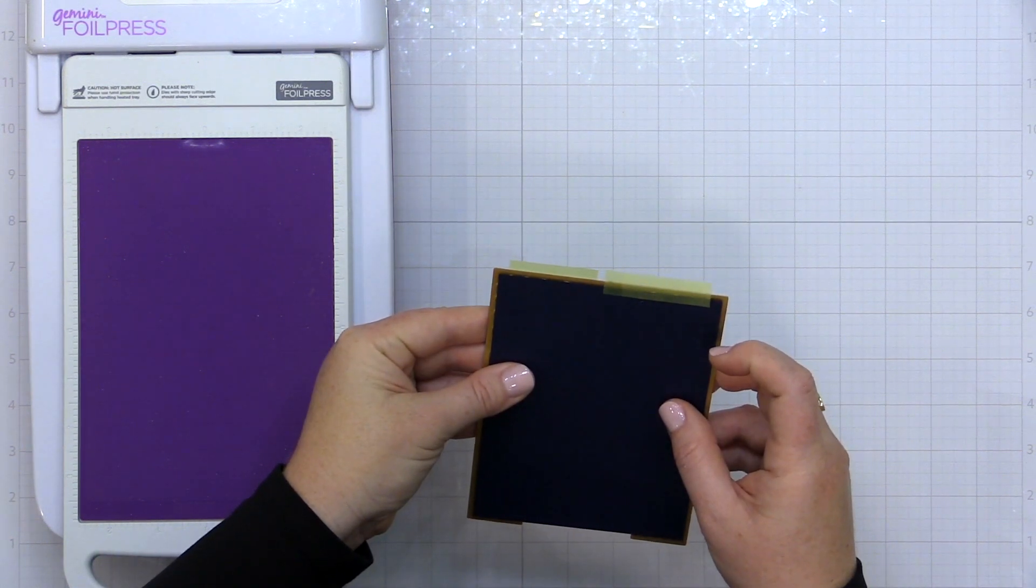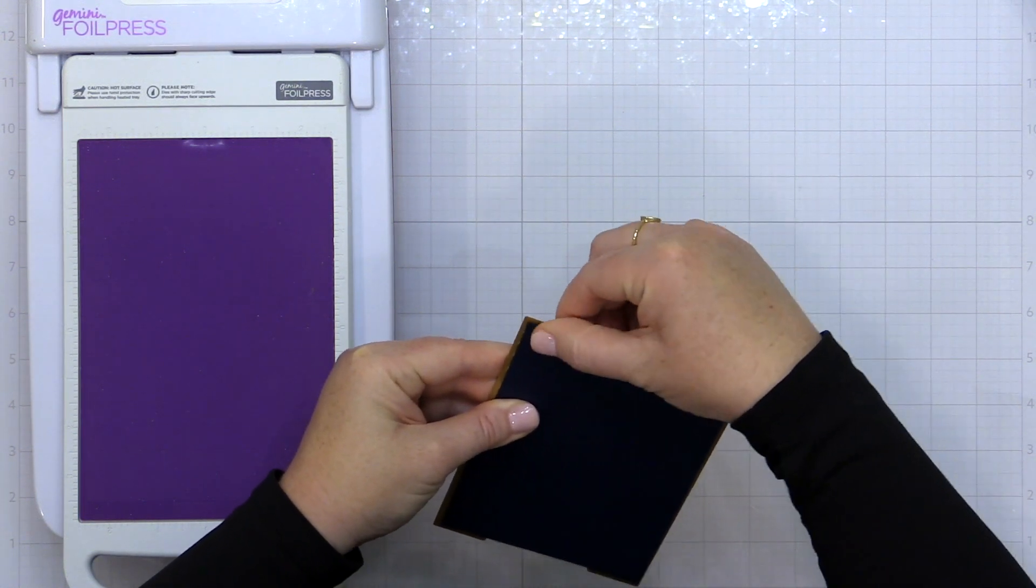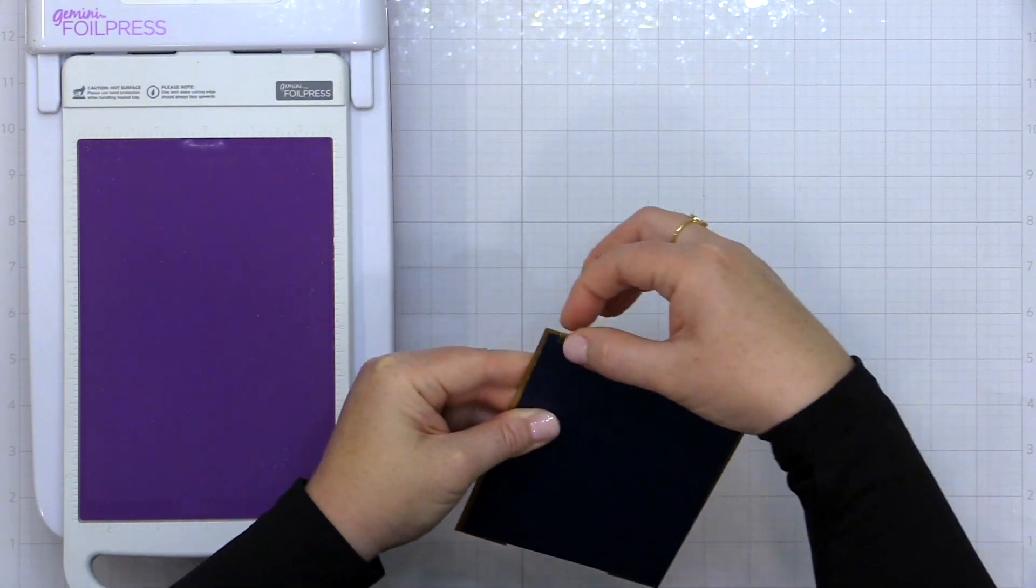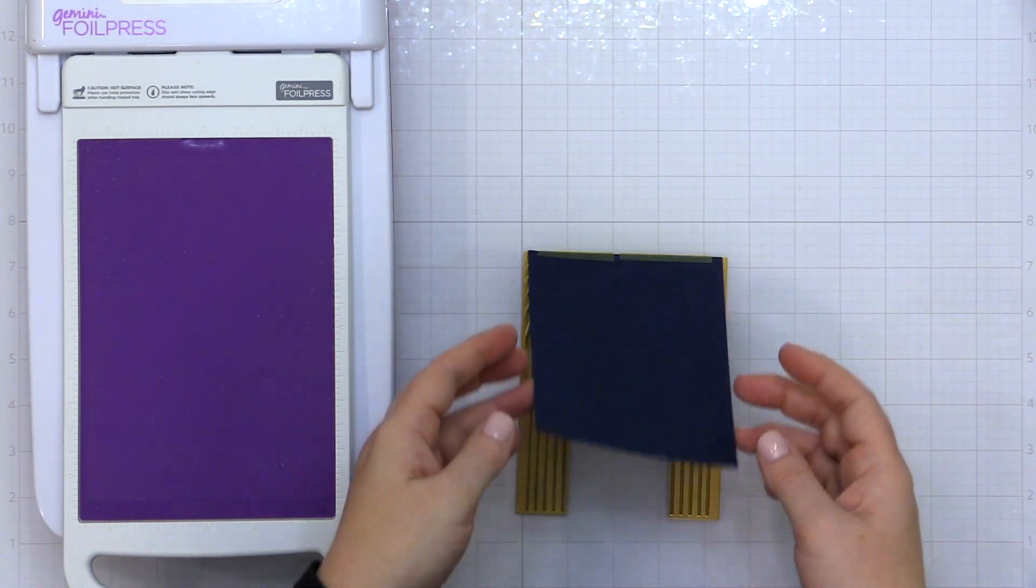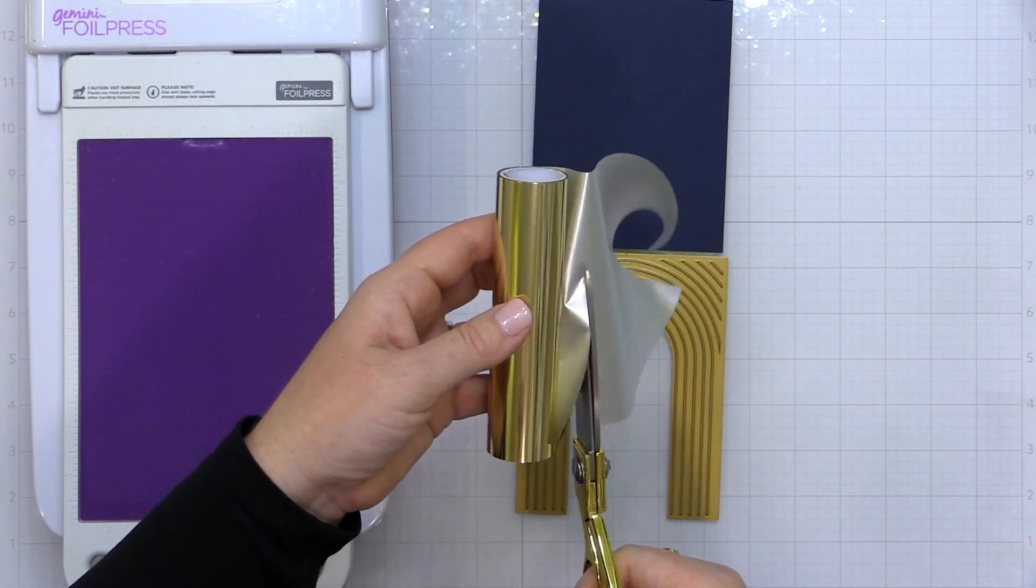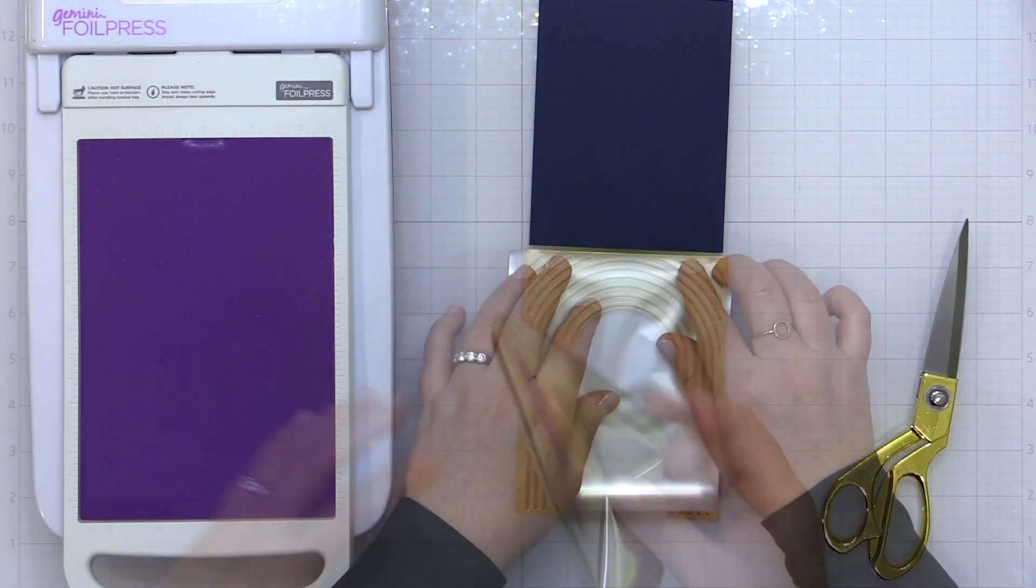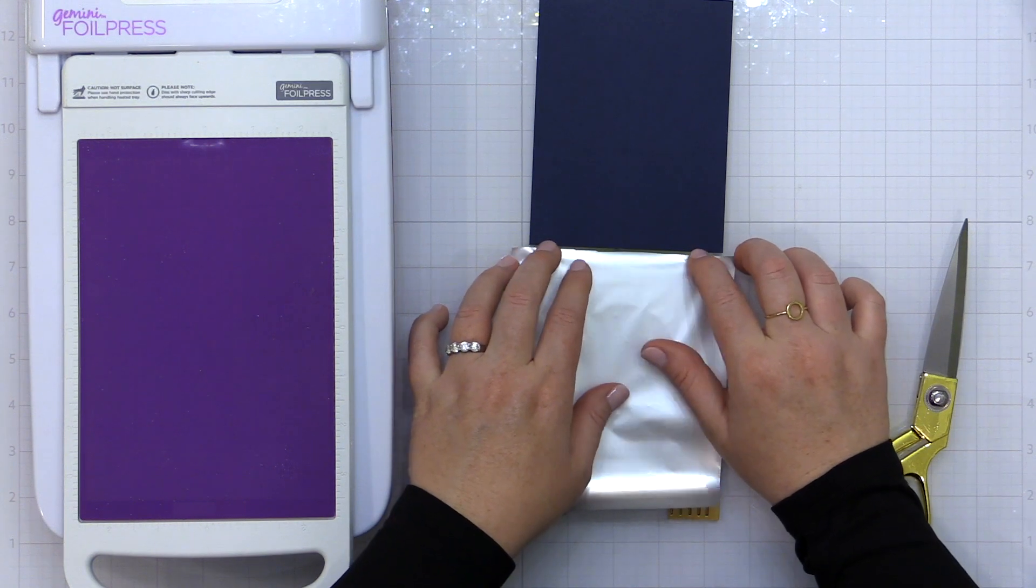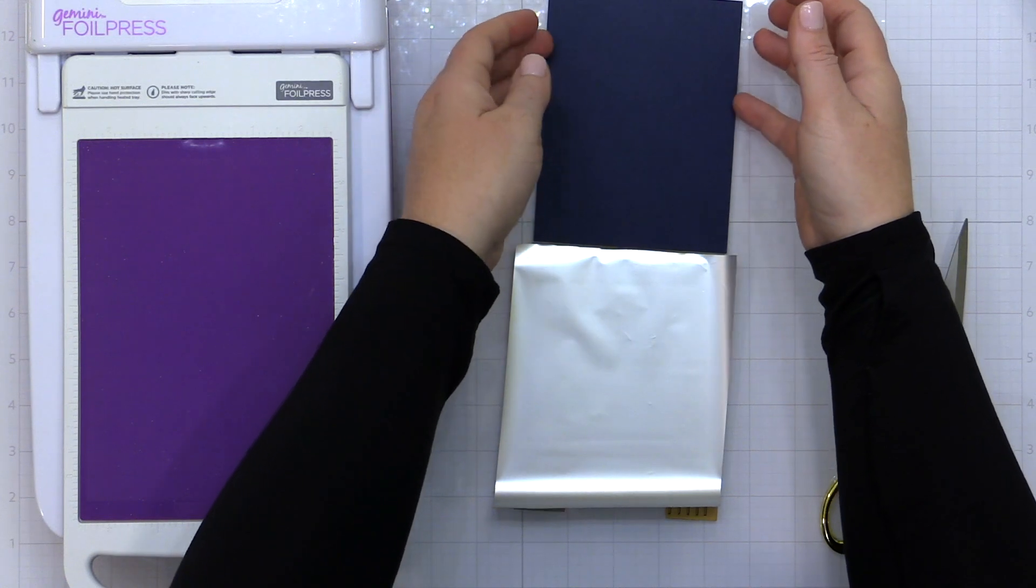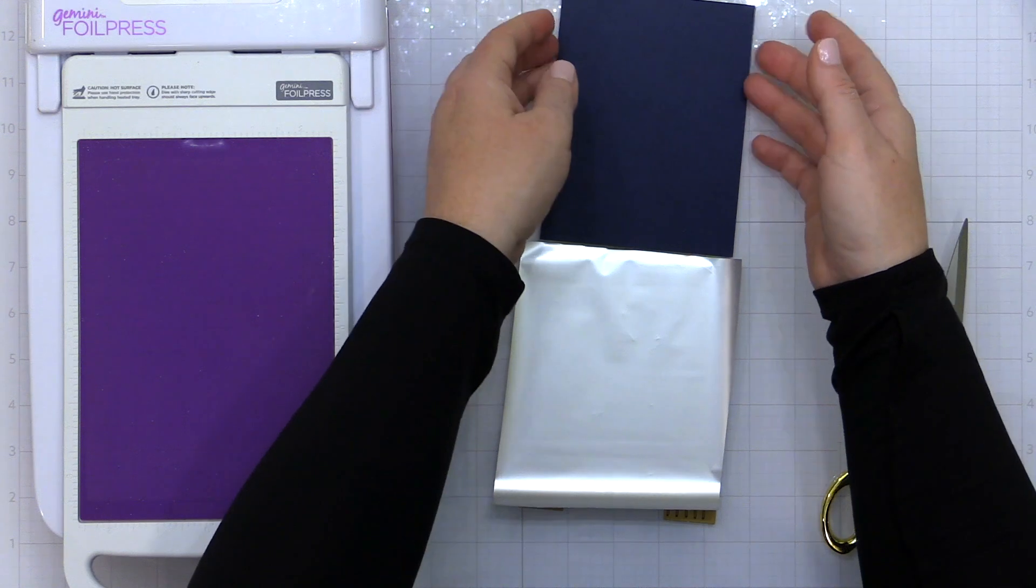Now this is going to come in handy later because not only is this helping me align things, but it's helping me keep things aligned because you're going to see that on my first pass through I didn't get a great foiling result. So once I have that tape positioned where it's kind of holding that hot foil plate and that cardstock together like a book, I can open it up and I can place my foil with the pretty side touching the pattern of the hot foil plate, and I'm going to close this book. So I'm going to sandwich this right in between that hinge that I've created.